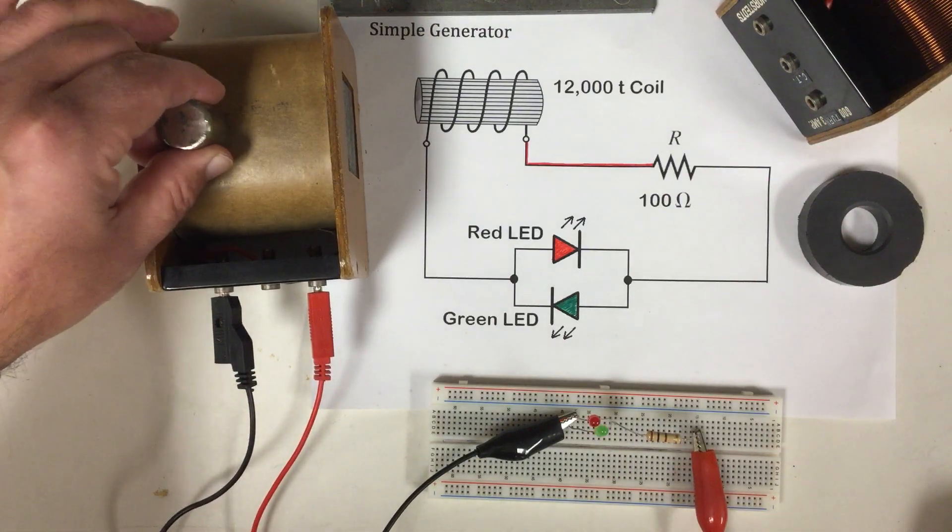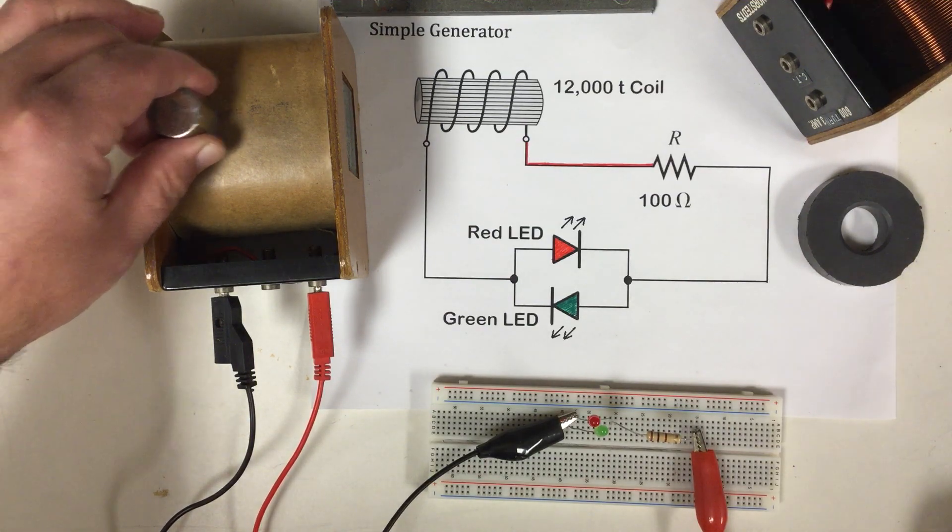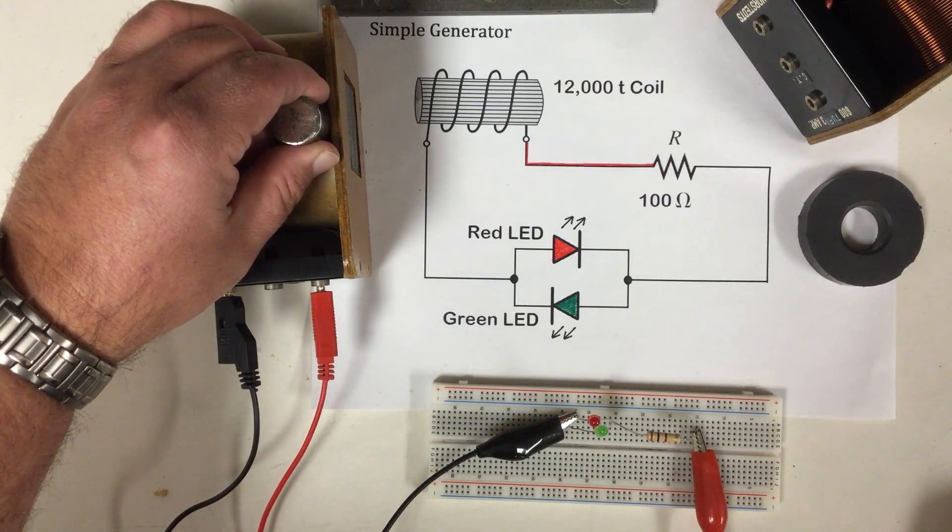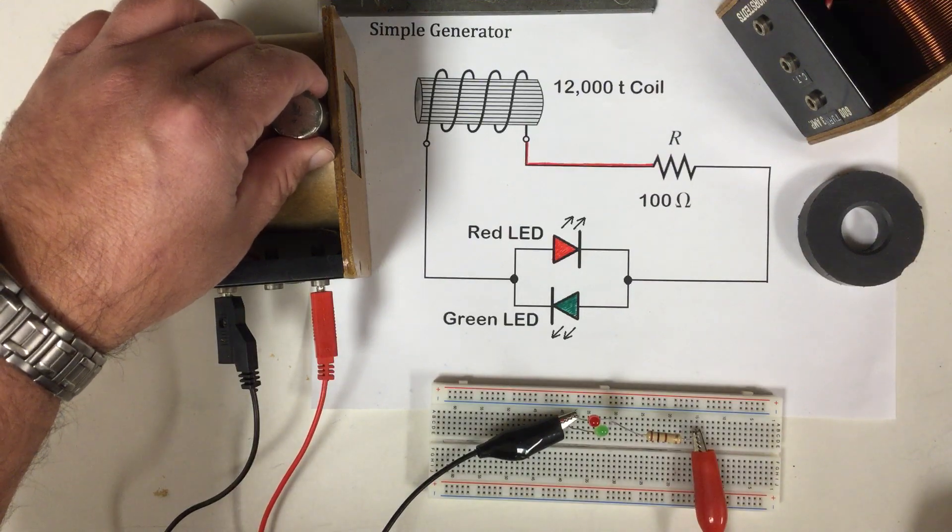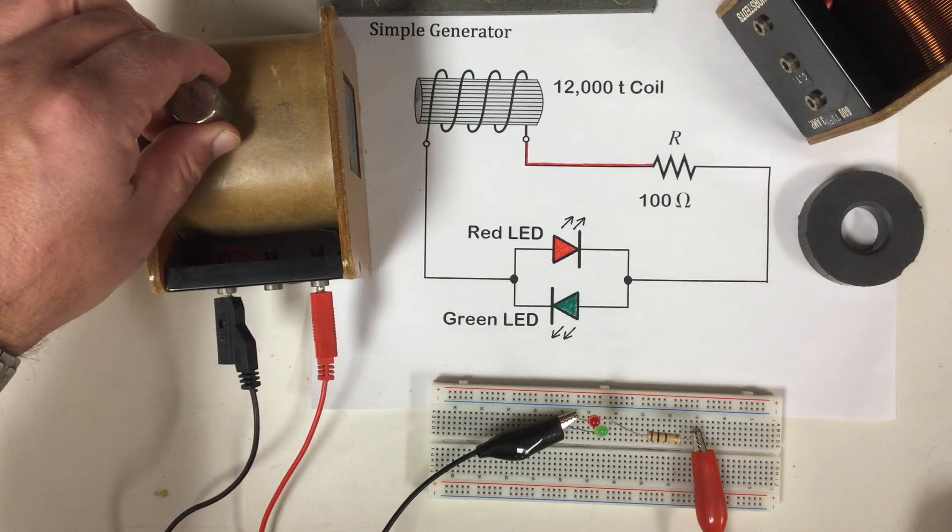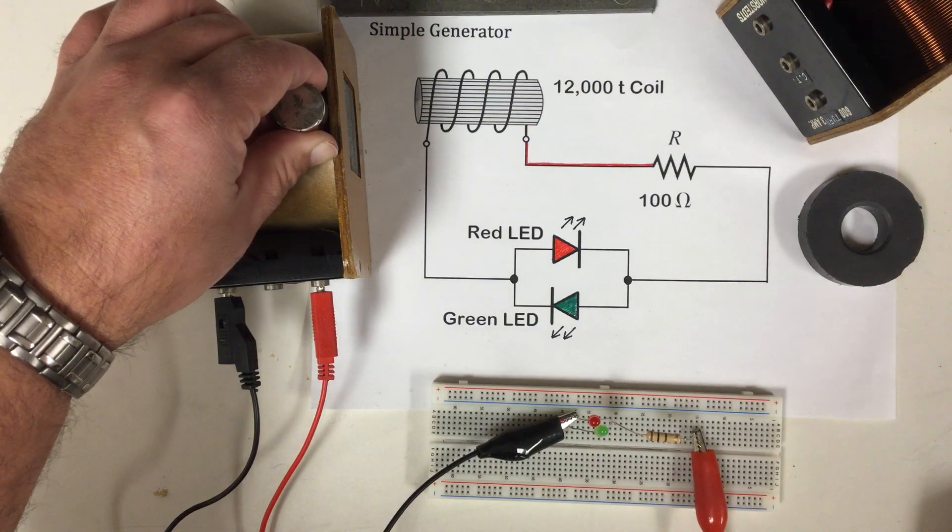Now as I pull my electrons one way, I force them line up in one direction. So my current goes one way. As my movement goes the other way, my electrons are forced to line up the other way. Opposites attract. So as I pull it one way, my current goes one way. As I go the other way, my voltage is generated and my current goes the opposite way.